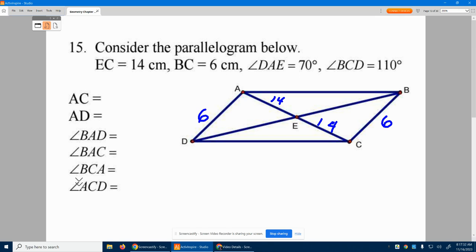Now it starts giving me angles. Remember, opposite angles are going to be equal. It says angle DAE, so it talks about this angle right here. This guy is 70. That doesn't tell me the whole angle, but let's come back to that. BCD is 110.